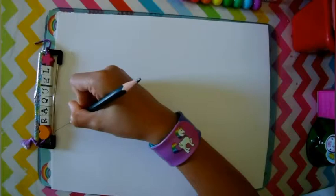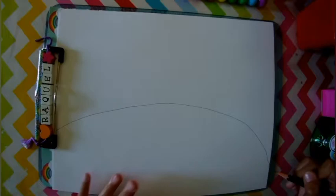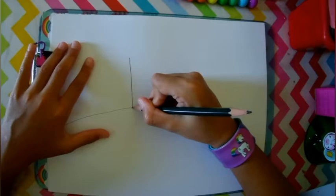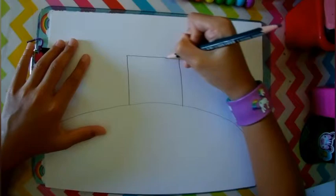First you are going to draw a hill. Like that. And then just draw a simple house. Do it this simple way. Does not have to be realistic.